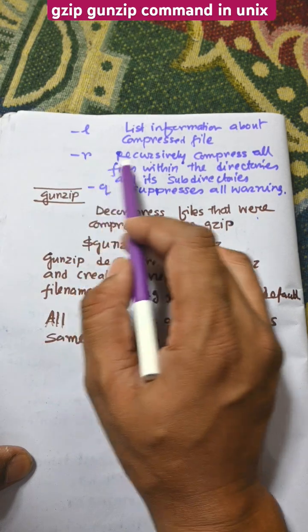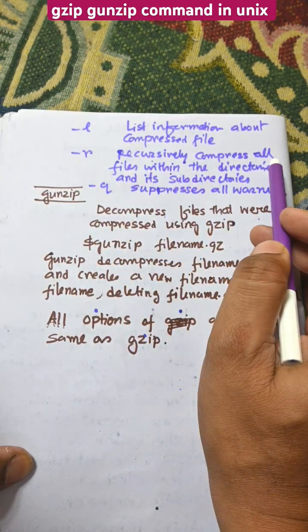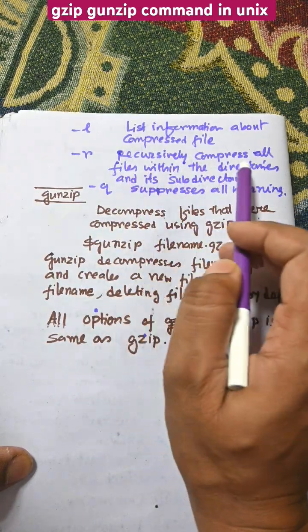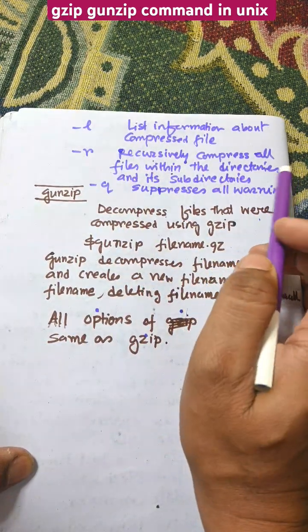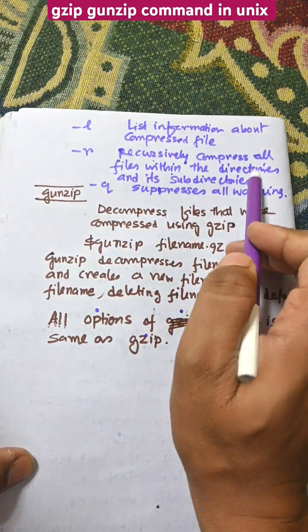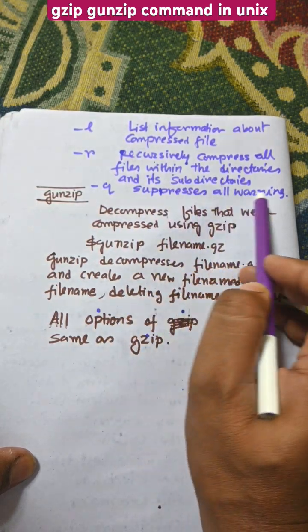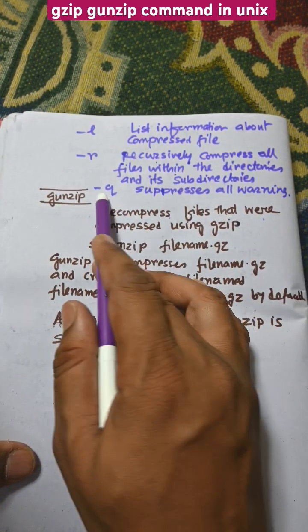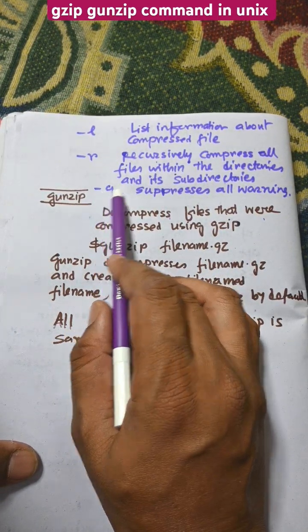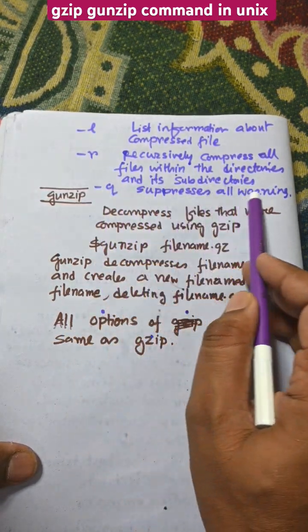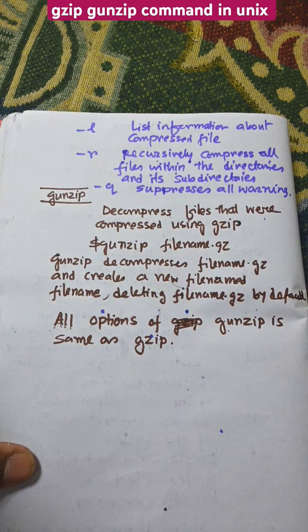The `-l` option lists information about the compressed file. `-r` recursively compresses all files within directories and subdirectories. `-q` suppresses all warnings — q stands for quietly, suppressing all the informational messages.